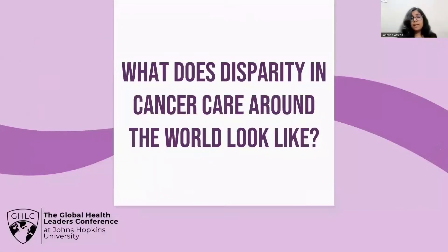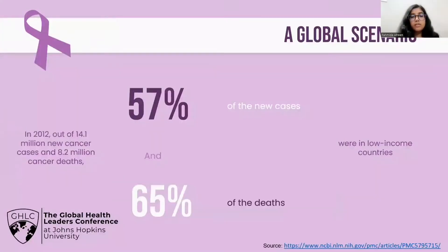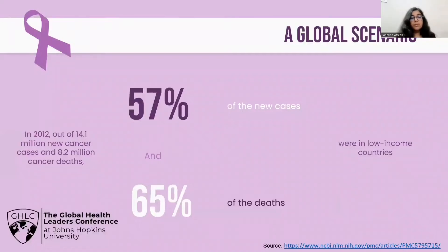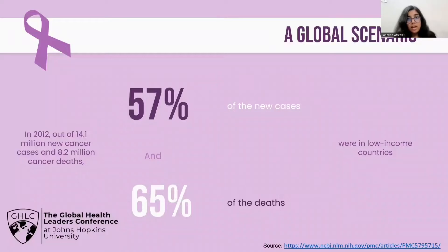So what does disparity in cancer care around the world look like? In 2012 there were 14.1 million new cancer cases and 57 percent of these cases were in low-income countries. There were 8.2 million cancer deaths and 65 percent of these deaths were in these countries. These low-income countries have fewer resources and treatment opportunities than high-income countries and hence face a huge burden of cancer prevalence as well as cancer mortality.